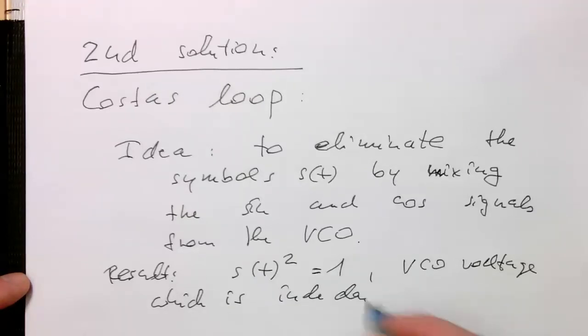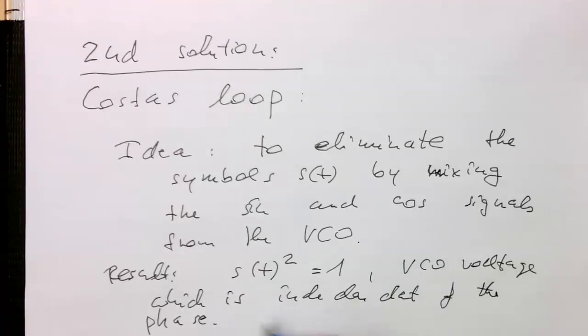This means that the VCO voltage is independent of the phase information being transmitted. Obviously this only works if S(t) is minus one or plus one, and with that the squaring gives us a one.